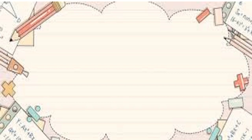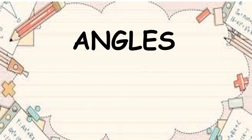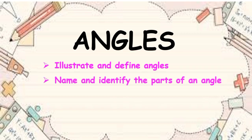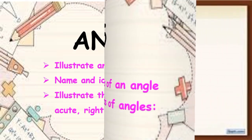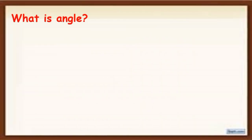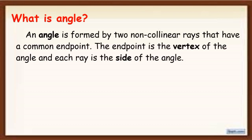Hello everyone. In this video I'm going to discuss about angles. We are going to illustrate and define angles, name and identify the parts of an angle, and illustrate the different kinds of angles — which are the acute angle, right angle, and the obtuse angle. Now, what is an angle? An angle is formed by two non-collinear rays that have a common endpoint.